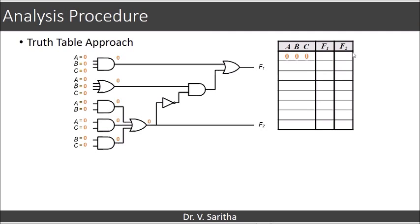You can observe the first level output, second level output, third level, fourth level and fifth level output. Here you can observe that F1 is 0 and F2 is also 0. So write the end truth table F1 and F2 as 0, 0.